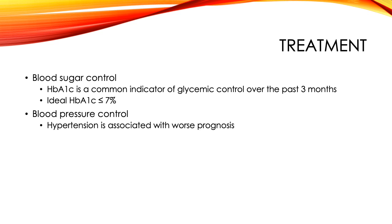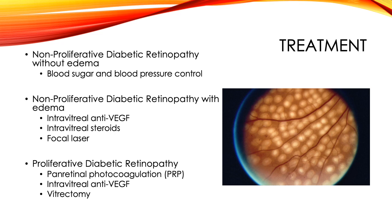Next I would like to discuss treatments for diabetic retinopathy. In all patients with diabetic retinopathy, a critical aspect of treatment is blood sugar and blood pressure control to prevent disease progression. Specifically, patients should aim for a hemoglobin A1c of less than 7% and blood pressures within the normal range for their age. Patients with non-proliferative diabetic retinopathy with edema may be treated with intravitreal anti-VEGF injections to combat the abnormal VEGF and leaky vessels of diabetic retinopathy.